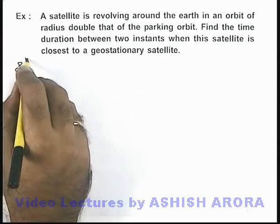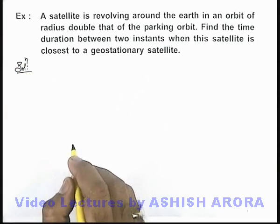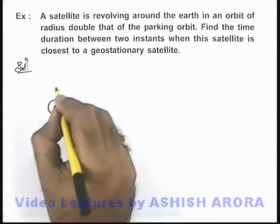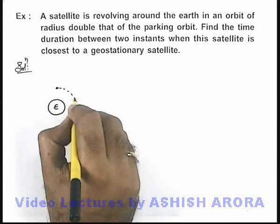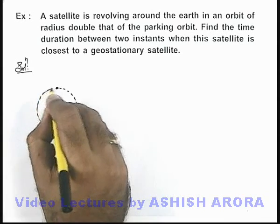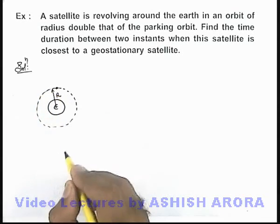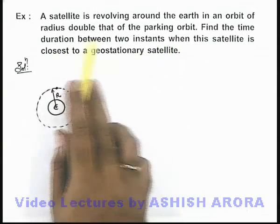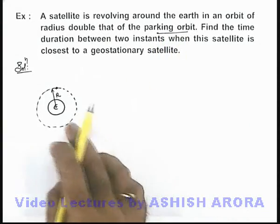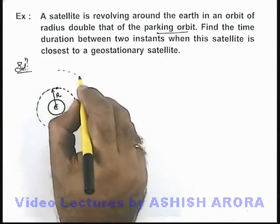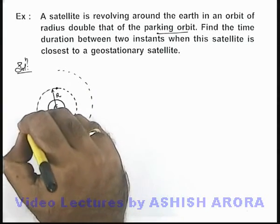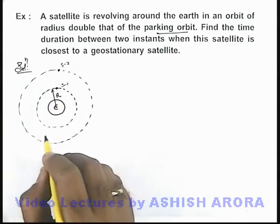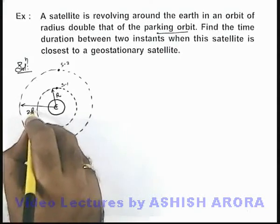Now let's draw the pictorial view of the satellites revolving around Earth. This is Earth, and this is a geostationary satellite revolving around Earth in an orbit of radius r. The other satellite is in an orbit of radius double that of the parking orbit — which is the orbit of the geostationary satellite — so its orbit has radius 2r. This is satellite 1 (geostationary) and this is satellite 2.